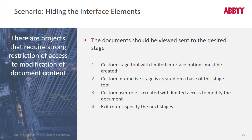One thing you can do is hide certain interface elements with a stage tool. For instance, you can limit access for a verification operator to modify the document by hiding features, and then you can have these limitations invoked for certain users and for certain stages.